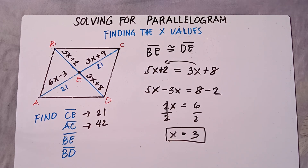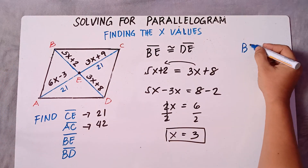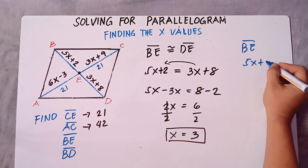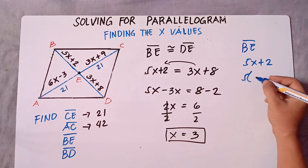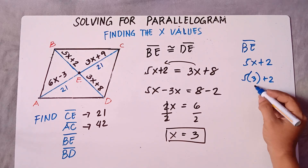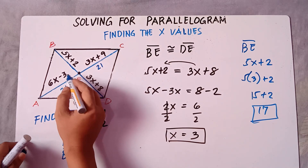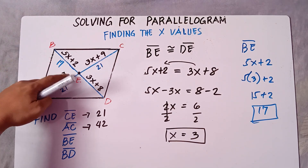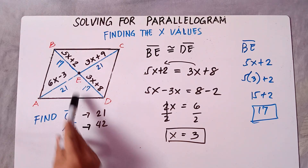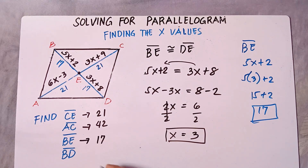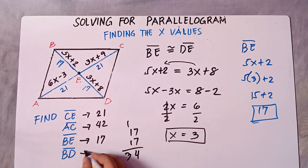So X equals 3. Substitute into BE: 5 times 3 plus 2 equals 15 plus 2, which is 17. So BE is 17. Since BE is congruent to DE, DE is also 17. Therefore BD equals 17 plus 17, which is 34.